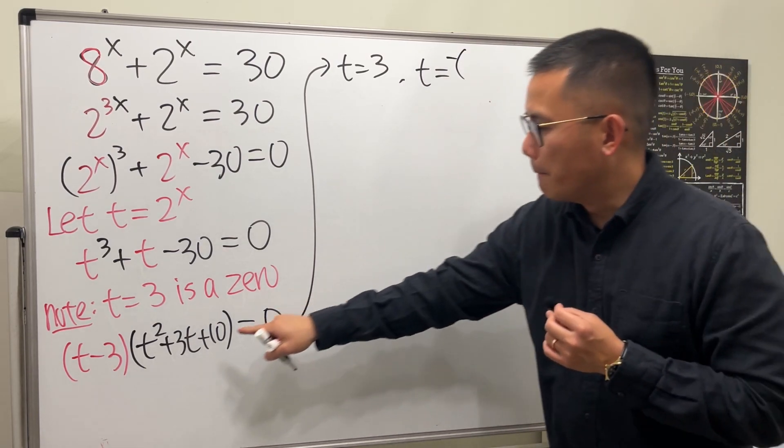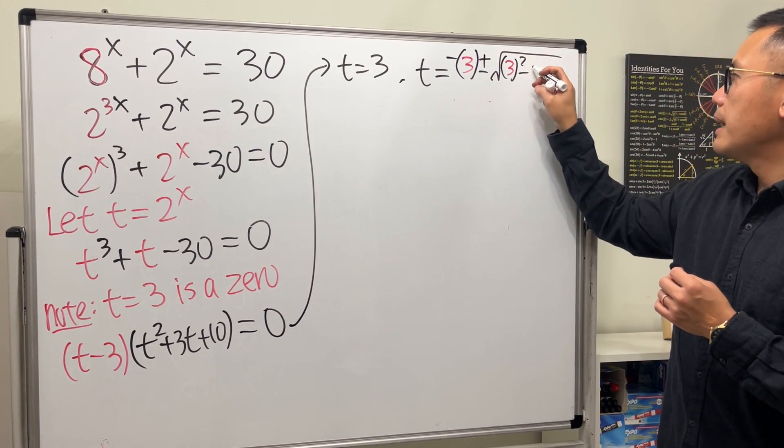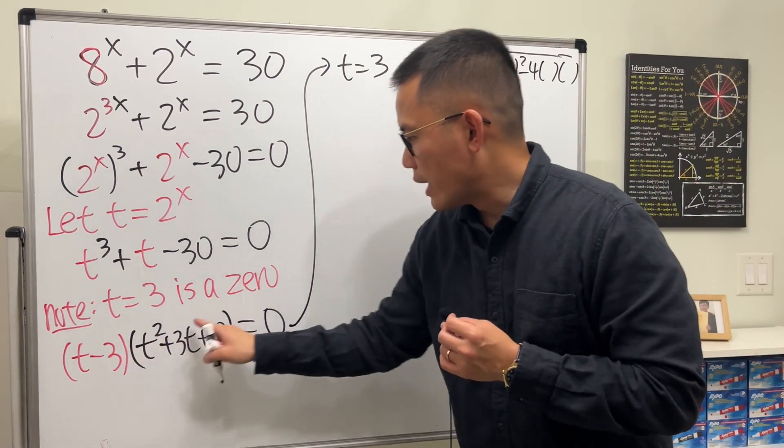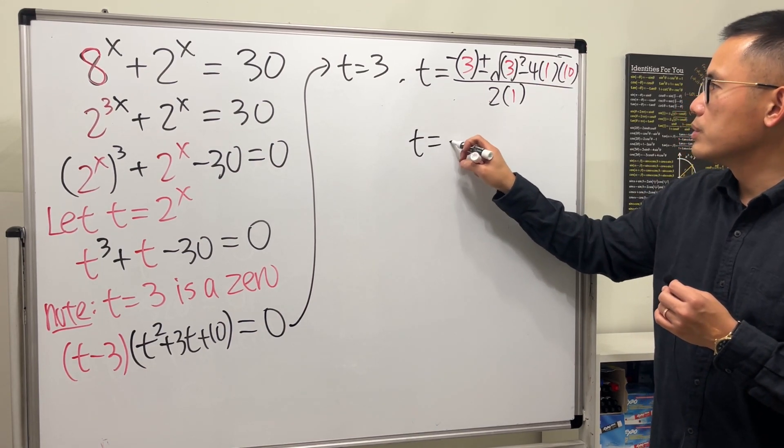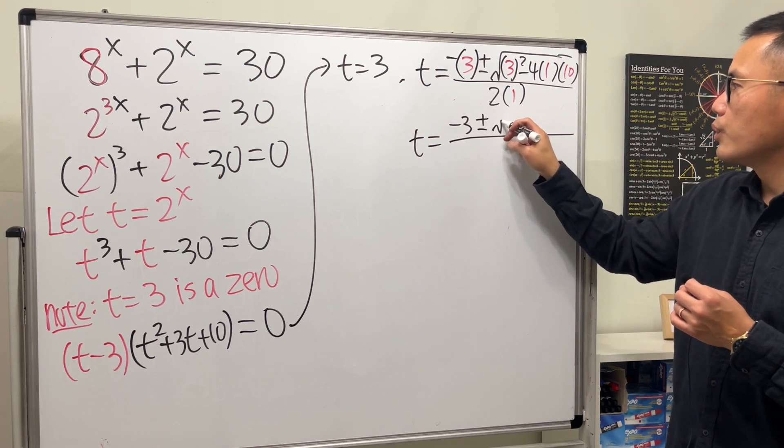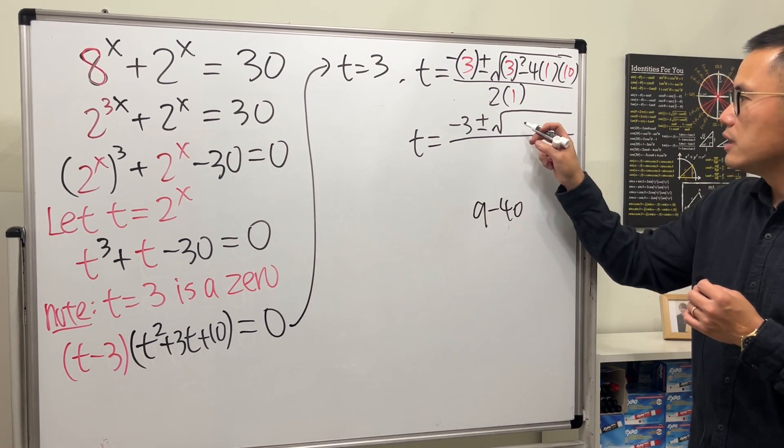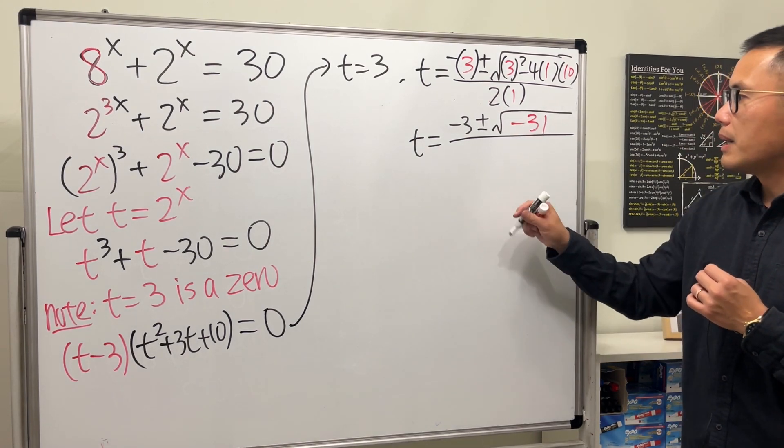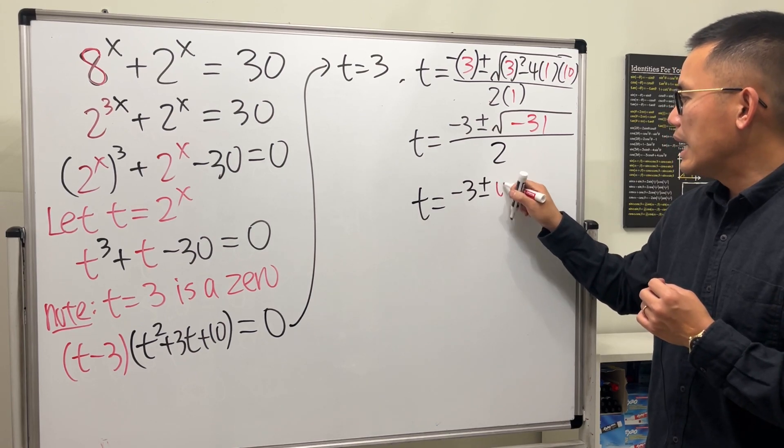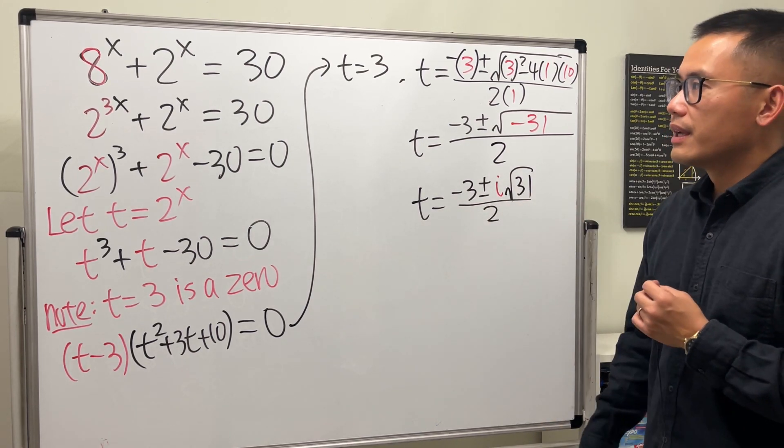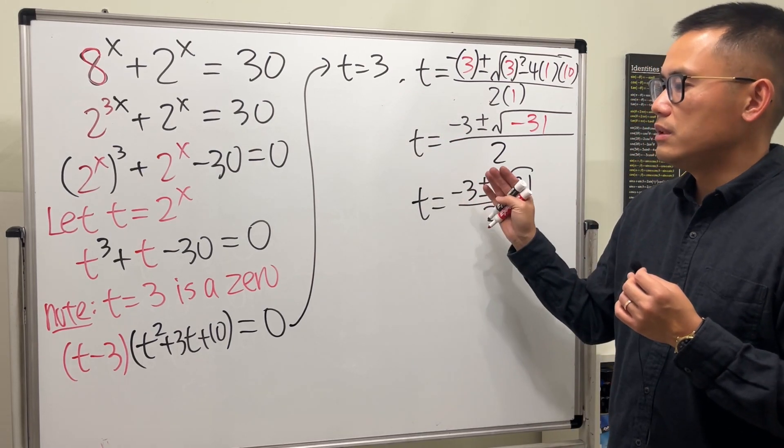t equals negative b, which is 3, plus or minus square root, and then we have b squared, which is 3 squared, minus 4ac. a is 1, c is 10, all over 2 times a, which is 1. So if you look at this, t is equal to negative 3, and then plus or minus square root, this is 9 minus 40, right? That will give us negative 31 inside of the square root, and then on the bottom we have 2. But we have a negative inside of the square root, so t is equal to negative 3 plus or minus i square root of 31 over 2. Now, if we're just trying to solve this cubic equation, this and that will be the answer. We have three answers for that cubic equation.